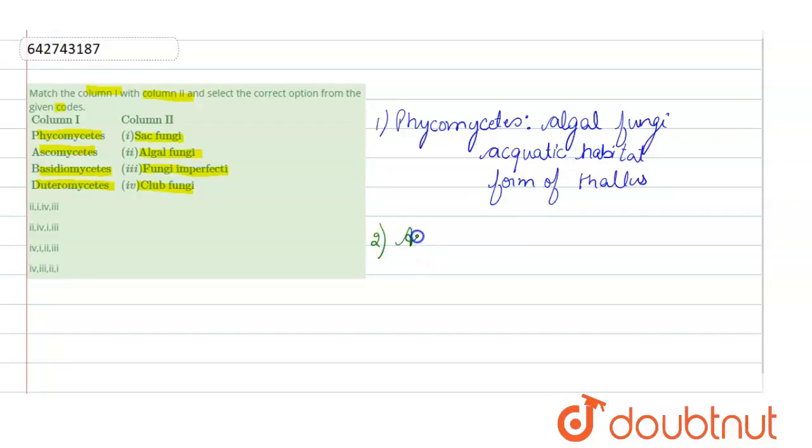The second one is ascomycetes. Now what is ascomycetes called and why? Ascomycetes is called sac fungi. The question arises why this is called sac fungi. Because they form a sac-like structure called ascus, which contains the sexual spores called ascus spores that are produced by the fungi.